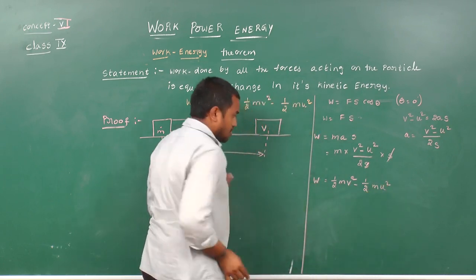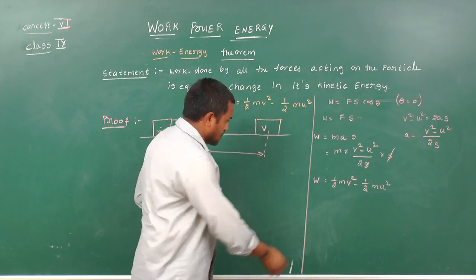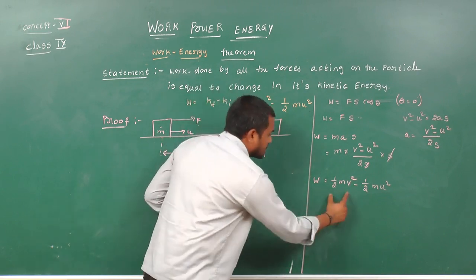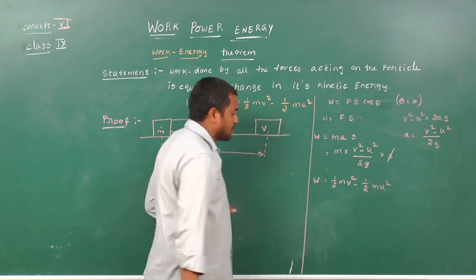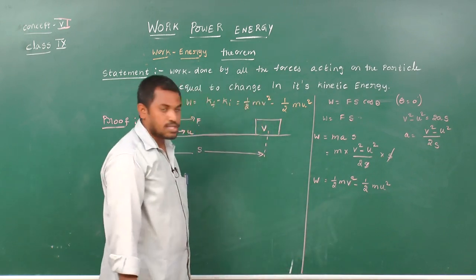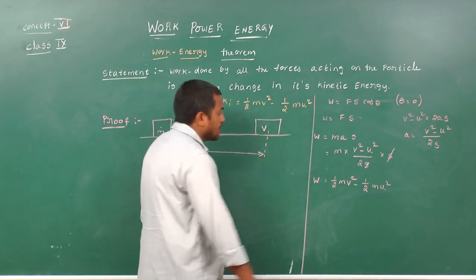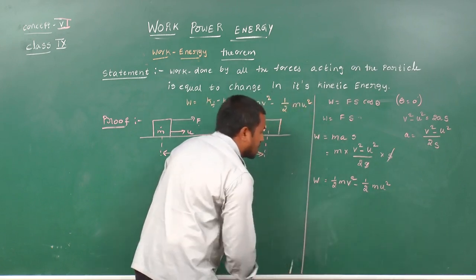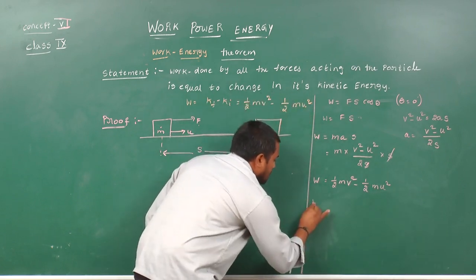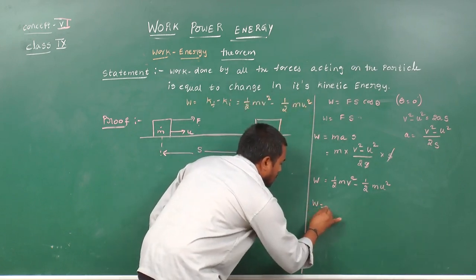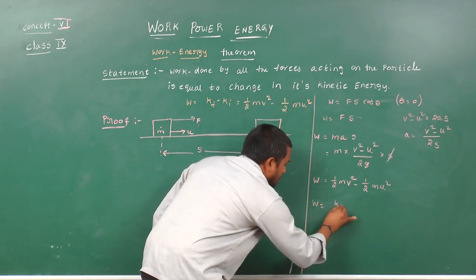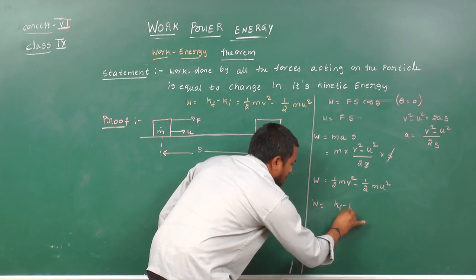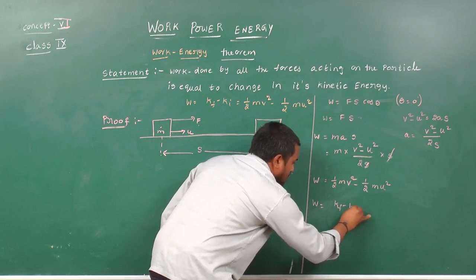This is the work done. This equals the final kinetic energy of the particle minus the initial kinetic energy of the particle. Thus, work done equals final kinetic energy minus initial kinetic energy.